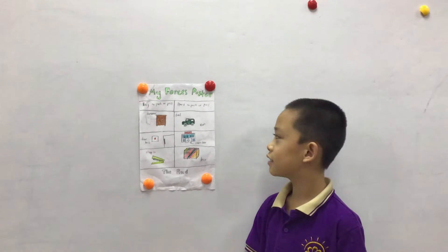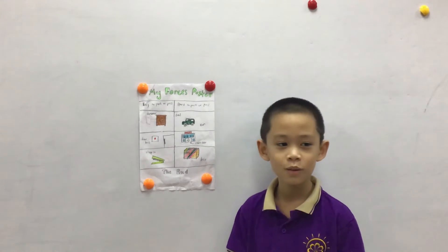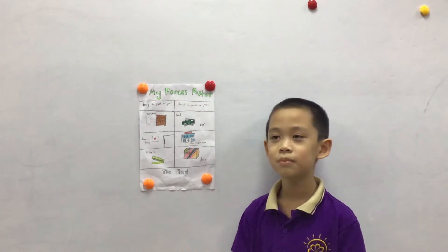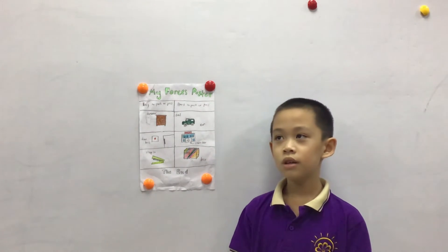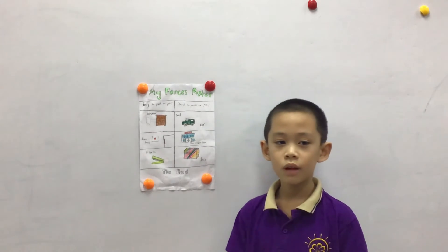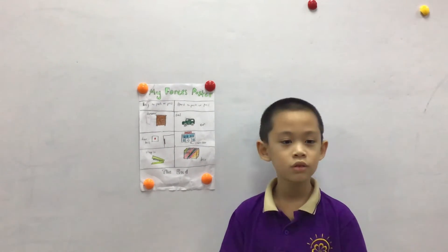The second thing that is hard to push or pull is the drawer door. It is hard to push or pull because it is big. We do that when we want to go in the store and buy something.